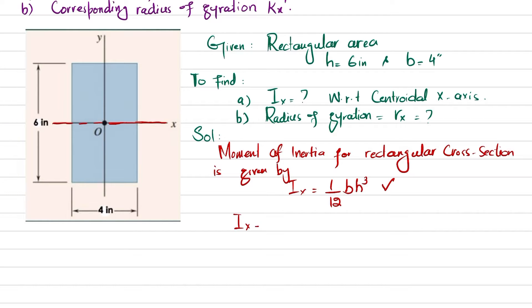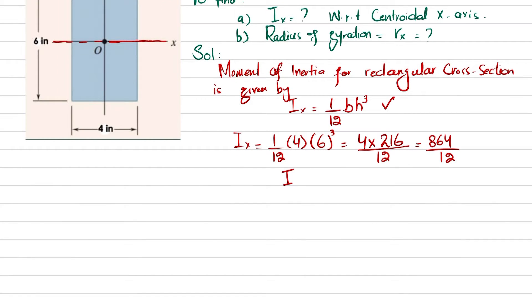So now you have the value one over twelve, b is four inch, and height is six, so it's one over twelve times four times six cubed. So it will be equal to four multiply by six cube is 216 divided by twelve. When you calculate it, it will be equal to 864 divided by twelve, so Ix will be equal to 72.